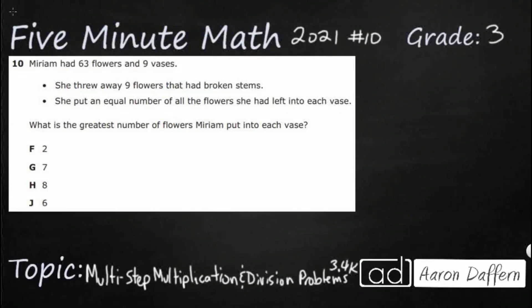Hello and welcome to 5-Minute Math. Today we are looking at the third grade concept of multi-step multiplication and division problems. This is standard 3.4K in the great state of Texas and we are using item number 10 off the 2021 released STAAR test.